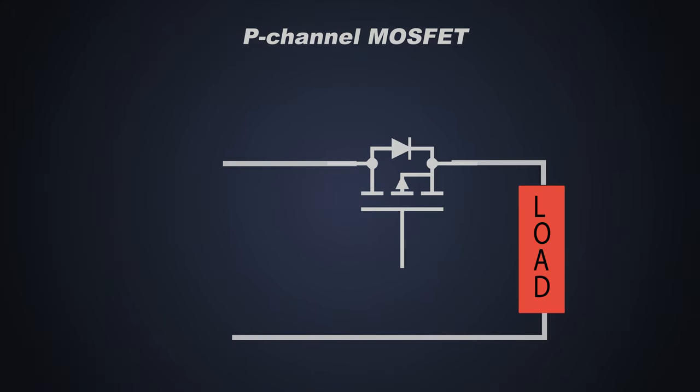We connect a p-channel MOSFET like this in the circuit, where the drain is connected to the supply of the system and source is connected to the load. We connect a pull-down resistor from the gate of the MOSFET to the ground and connect a zener diode from the source to the ground for protection. The zener diode will clamp the gate of the MOSFET to its zener voltage and protect it against over-voltage.